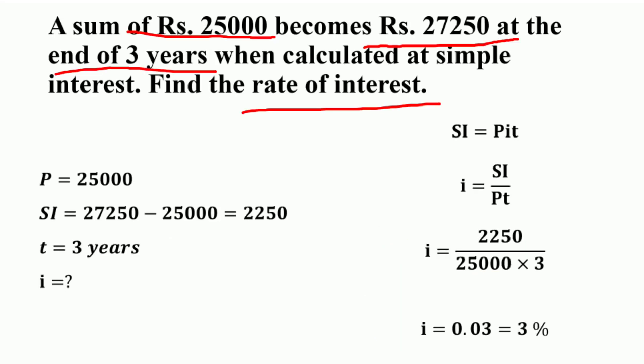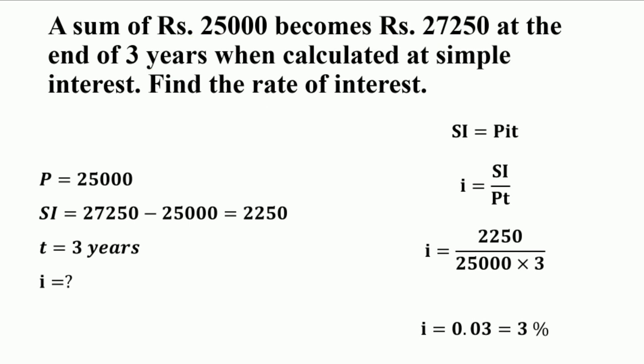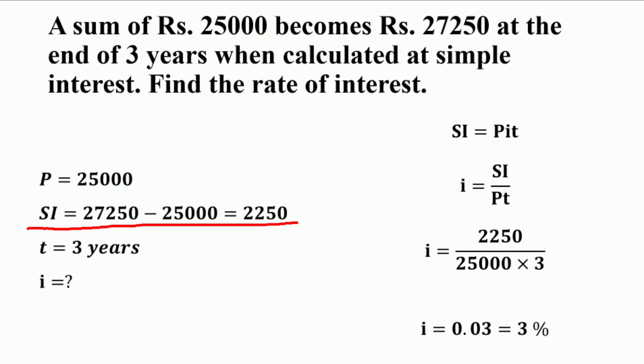For the next example, a sum of ₹25,000 becomes ₹27,250 at the end of 3 years when calculated at simple interest. What is the rate of interest? Unlike the previous example where we calculated the amount of interest, here we need to find the rate. The principal P = ₹25,000, and the simple interest is found by taking the difference: 27,250 − 25,000 = ₹2,250.